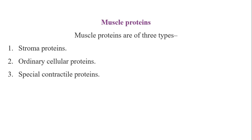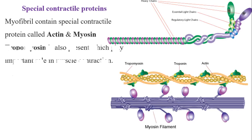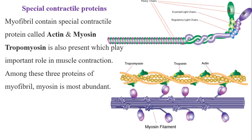Each myofibril contains specialized contractile proteins called actin and myosin. Troponin is also present and plays an important role in muscle contraction. Among these three myofibrillar proteins, myosin — which forms the thick filament — is the most abundant.